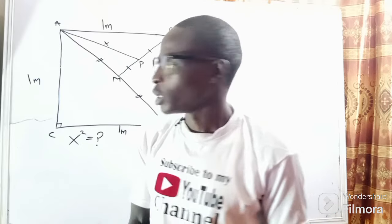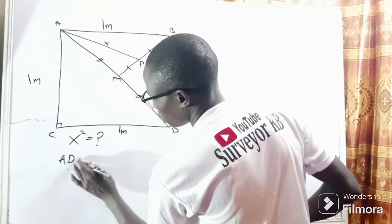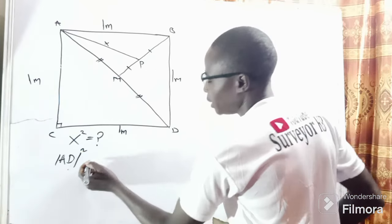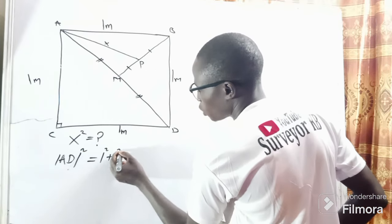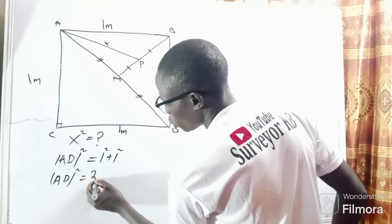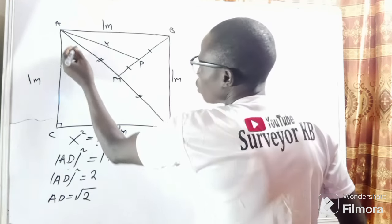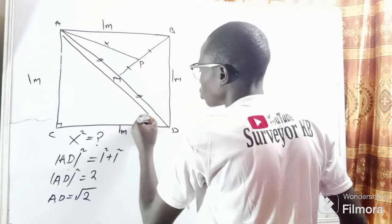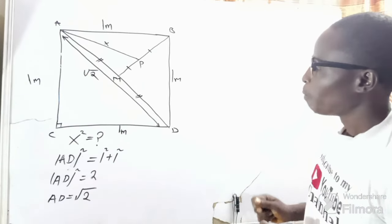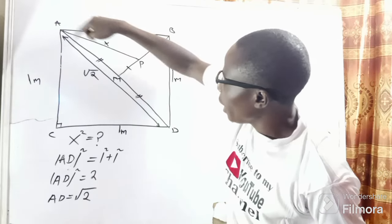So AD squared equals one squared plus one squared. Therefore AD squared equals two, which means AD equals the square root of two. So this line AD is equal to the square root of two. Now I want to find AM.